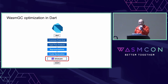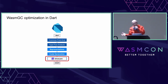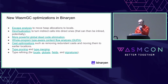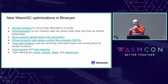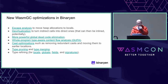In a concrete case like Flutter with Dart, the final step in the optimization pipeline is running the Binaryen optimizations — language-level optimizations followed by code generation to Wasm GC, and finally Binaryen optimizations to produce the final Wasm module. New Binaryen Wasm GC optimizations include escape analysis, devirtualization, more powerful dead code elimination, whole-program type-aware control flow analysis, type pruning, type merging, and type refining.